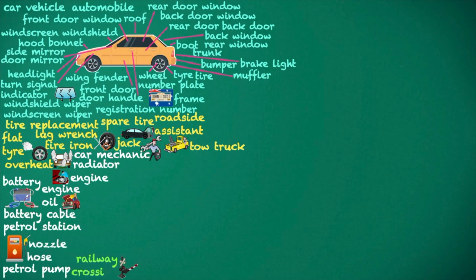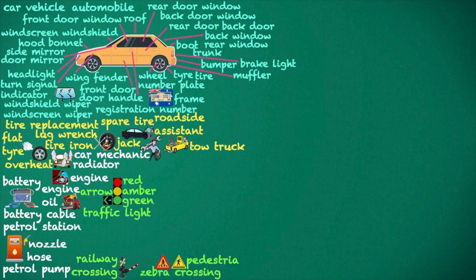Railway crossing. Traffic light. Green, amber, red, arrow. Zebra crossing. Pedestrian. Median strip. Crossroad.